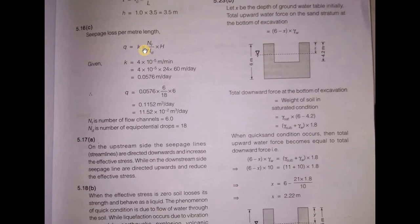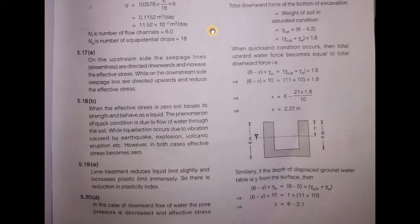Q is equal to k times nf by nd times h. Q is equal to nf by nd plus c.